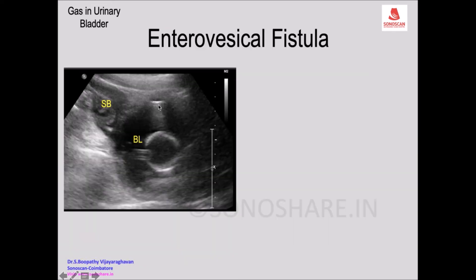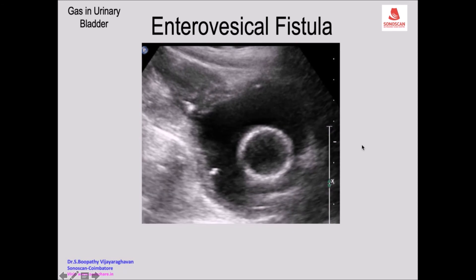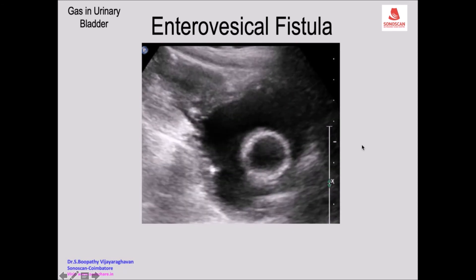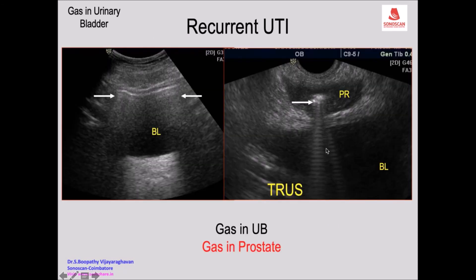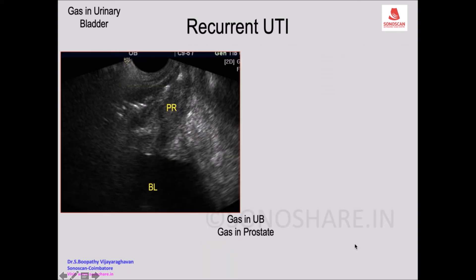Gas is seen in the urinary bladder and there is a Foley bulb in the bladder. You see a thick-walled small bowel loop adjacent to it, and there is a fistulous tract confirming that it is an enterovesical fistula. Gas is also seen in the prostate with reverberation artifact and dirty shadow, and when you turn to longitudinal scan you see the prostate - actually the gas is in the prostatic urethra.